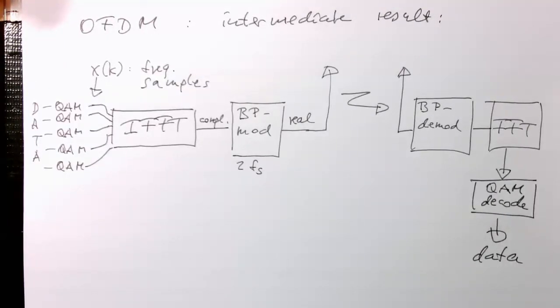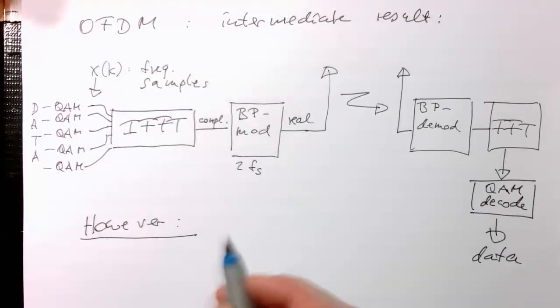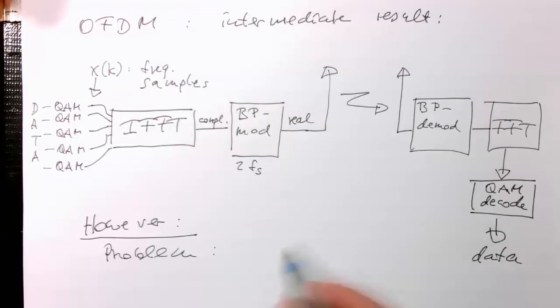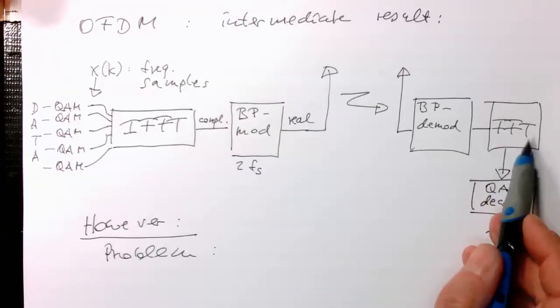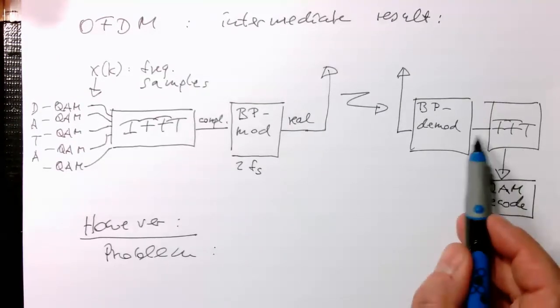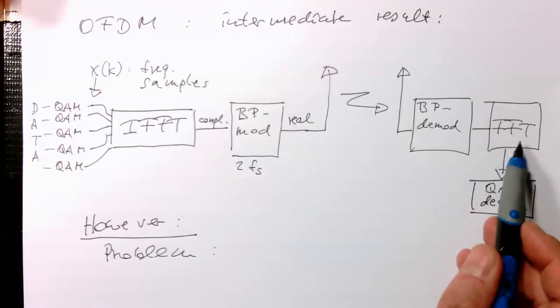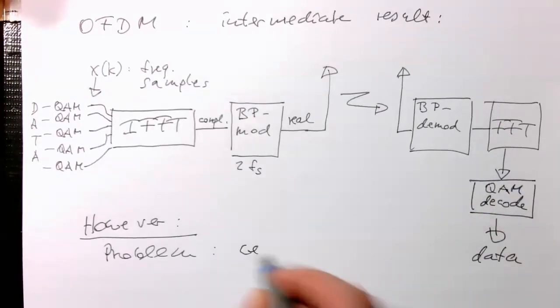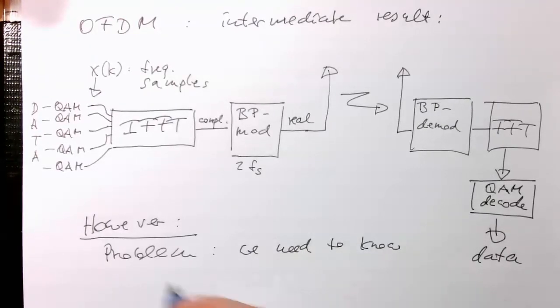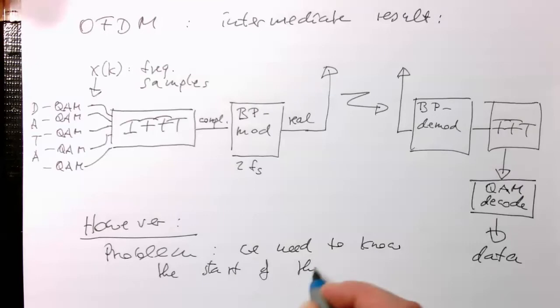So the question is, why is this not sufficient? So however, there's a problem with this. The problem is, we need to, in order that this FFT, this Fourier transform works here, we need to know exactly the start of the symbol. Otherwise, this is here completely messed up. So we need to know the start of the symbol.